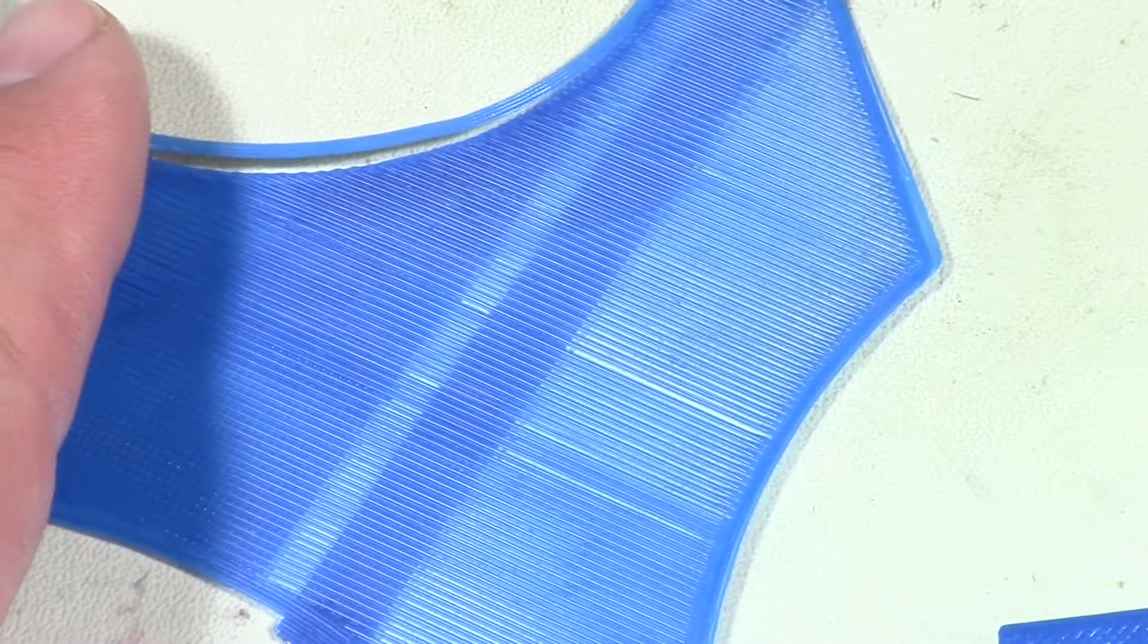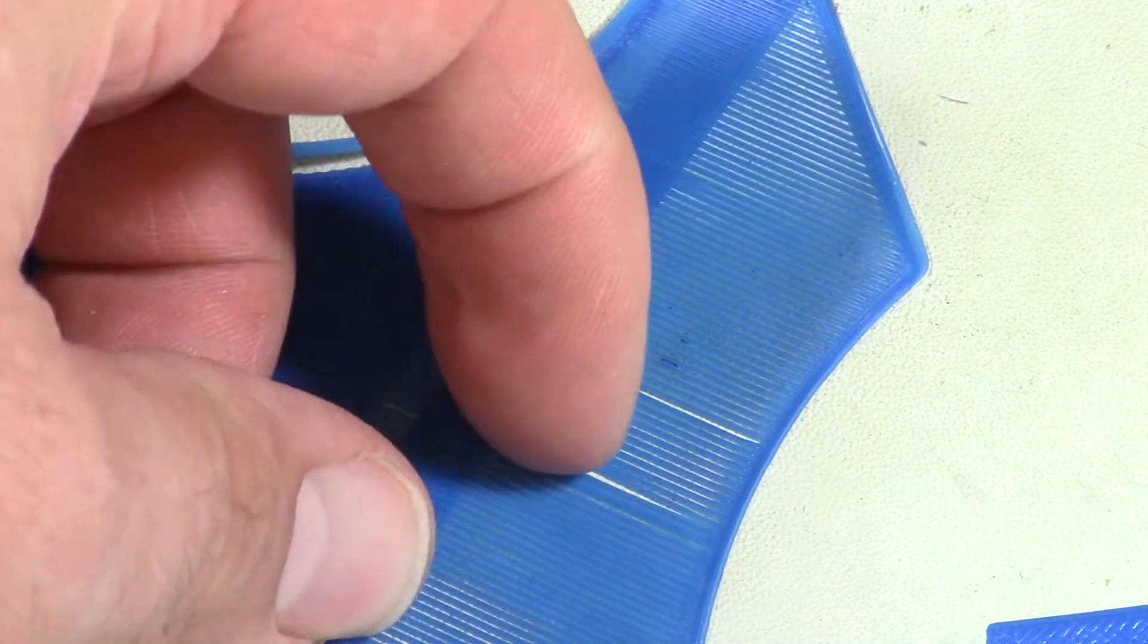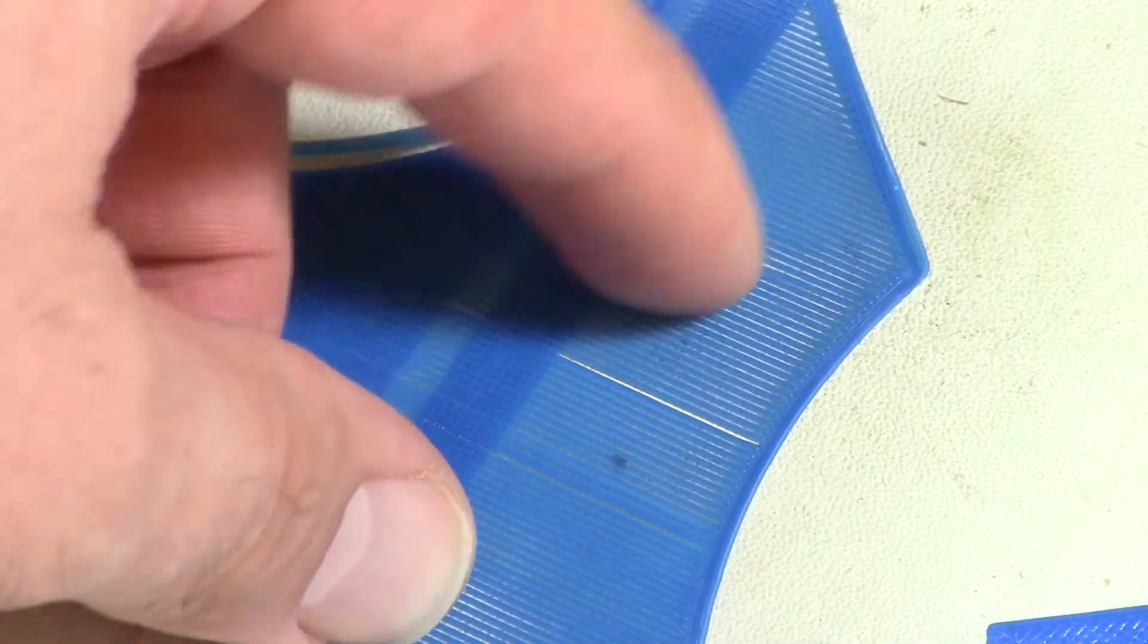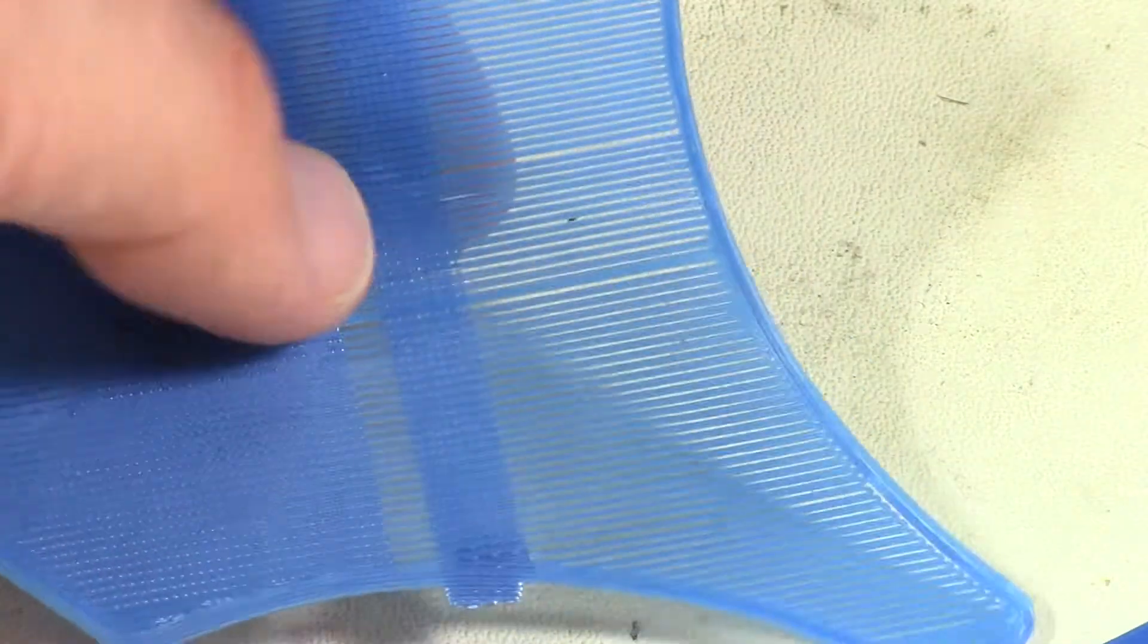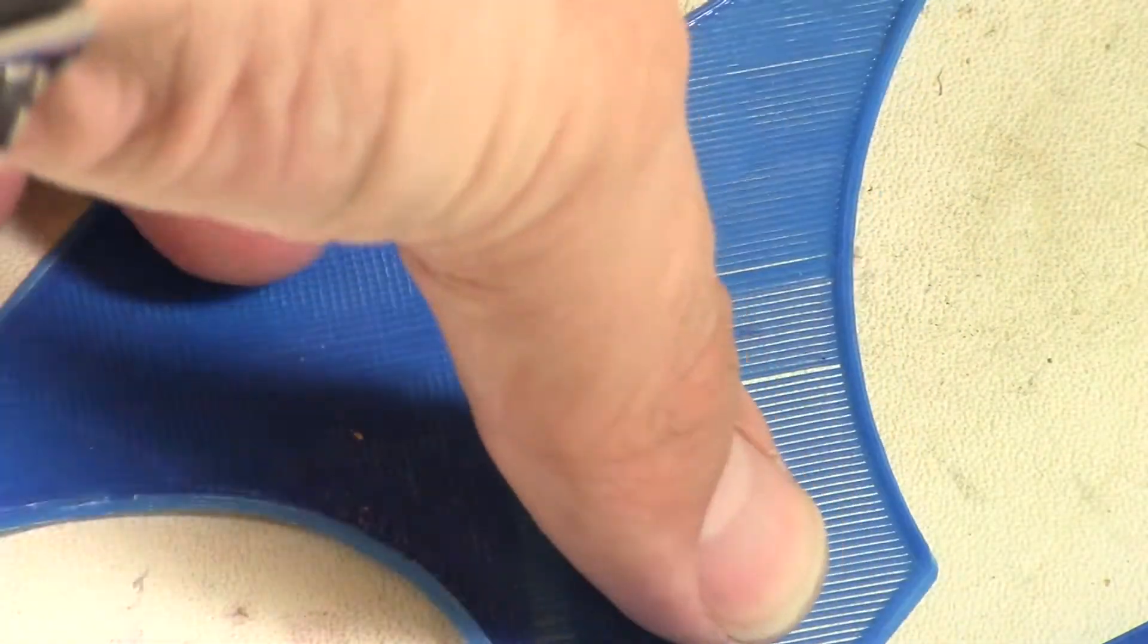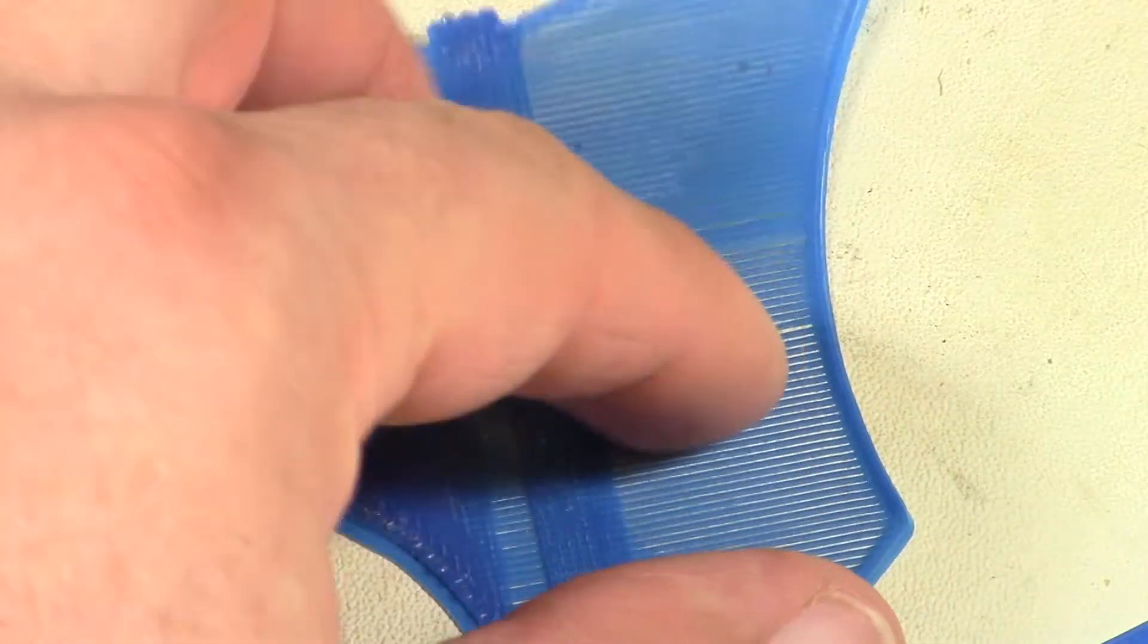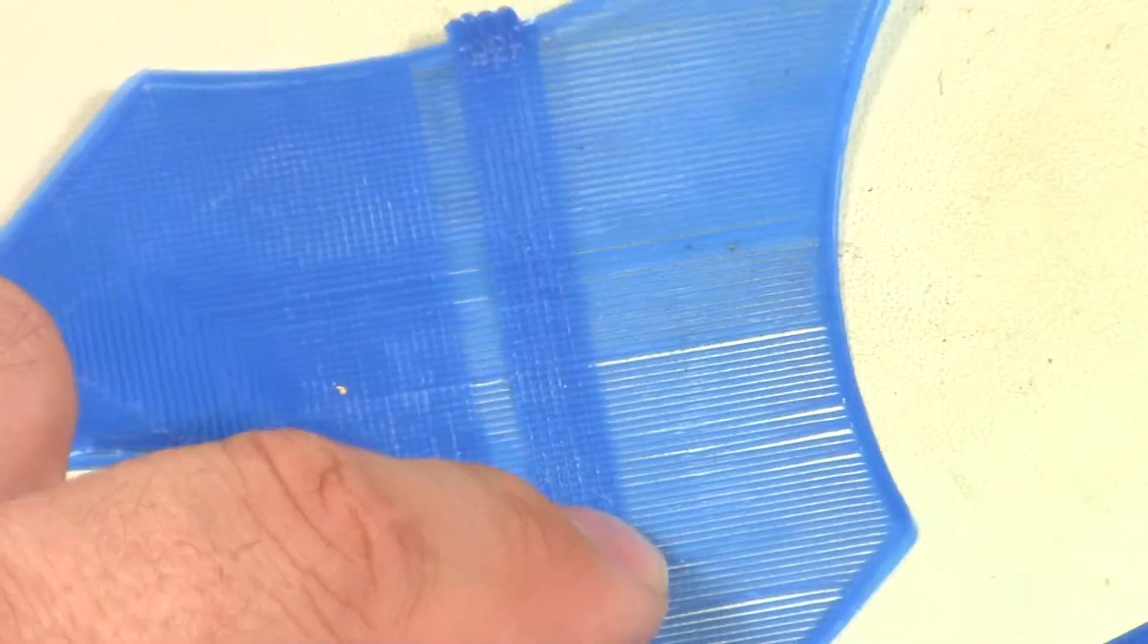I'm going to zoom way in. If you notice, see how there's no real adhesion here, even on the second layer? There's no real—it's all like a comb, like bristles in a comb. What this is due to, I'll show you. Let's move the other one in here.